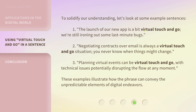To solidify our understanding, let's look at some example sentences. One: The launch of our new app is a bit virtual touch and go — we're still ironing out some last-minute bugs. Two: Negotiating contracts over email is always a virtual touch and go situation; you never know when things might change. Three: Planning virtual events can be virtual touch and go, with technical issues potentially disrupting the flow at any moment. These examples illustrate how the phrase can convey the unpredictable elements of digital endeavors.